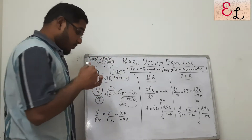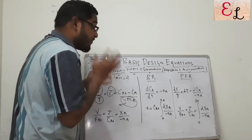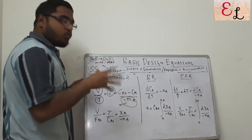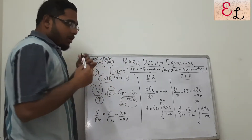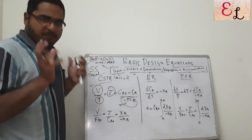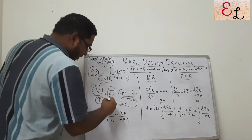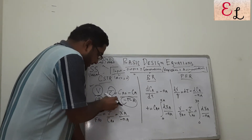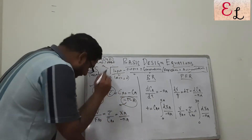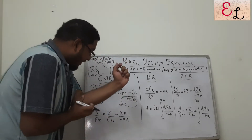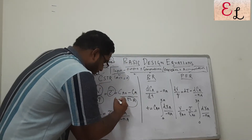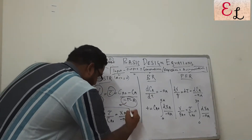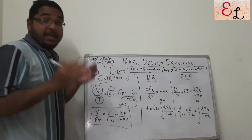The rate expression might have complex forms — not always first, second, or zeroth order. It could be a fractional order reaction like K1·CA to the half power divided by (K1 + K3·CA squared). If it is a second-order reaction, it's simply K·CA squared. We divide the entire equation on both sides by CA0 to get the most commonly used design equation of the CSTR.